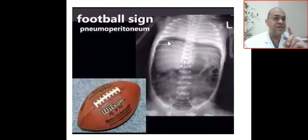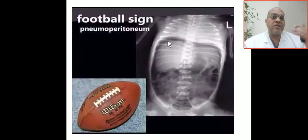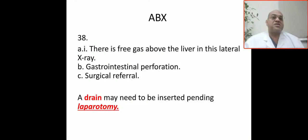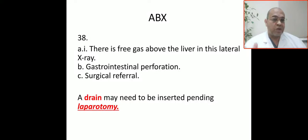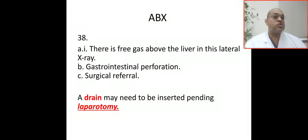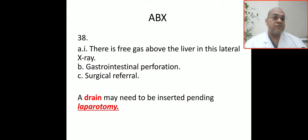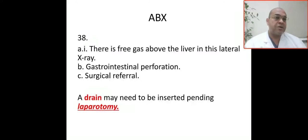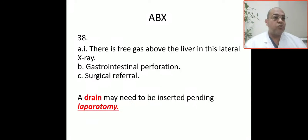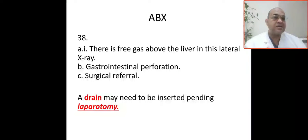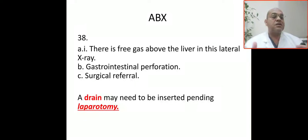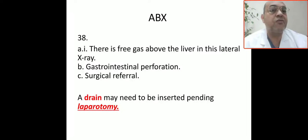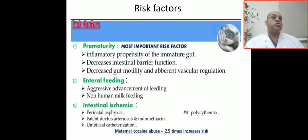Either way, air under the diaphragm or above the liver on X-ray indicates gastrointestinal perforation. This patient needs immediate surgical referral. What the surgeons do depends on the patient's clinical condition — stable patients go to the operating room; unstable patients or those under one kilogram may receive a drain or Penrose drain for air evacuation. These are the risk factors in our case.